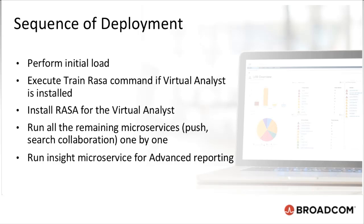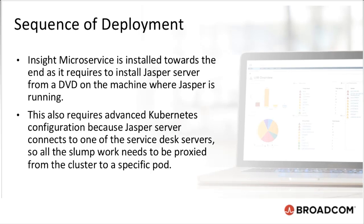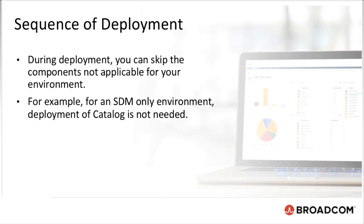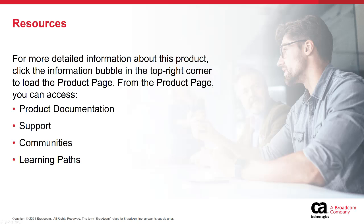Run the Insight Microservice for advanced reporting. Insight Microservice is installed towards the end, as it requires an installed Jasper Server from a DVD on the machine where Jasper is running. This also requires advanced Kubernetes configuration, because Jasper Server connects to one of the Service Desk servers, so all the work needs to be proxied from the cluster to the specific pod. During deployment, you can skip components not applicable for your environment — for example, in an SDM-only environment, deployment of Catalog is not needed. This completes Part 1 of the CA Service Management Container video series. Thank you for watching.